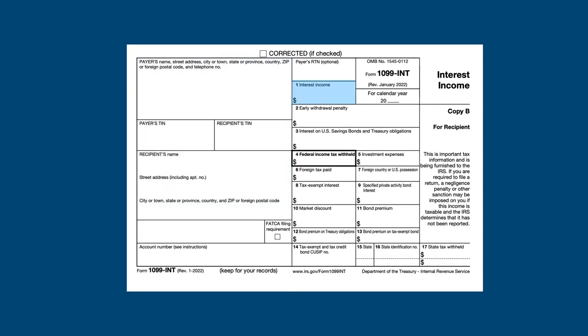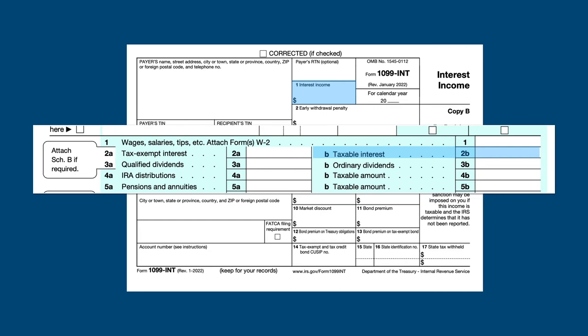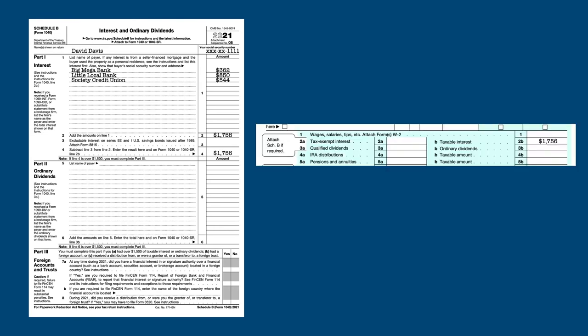Box 1 contains the taxable interest income. This is reported directly on line 2B of your Form 1040 if the total income from all your accounts is less than $1,500 for the year. If you have more than $1,500 in interest income, you must file Schedule B, listing the payers and amounts of interest paid. The total from Schedule B is then transferred to line 2B of Form 1040.